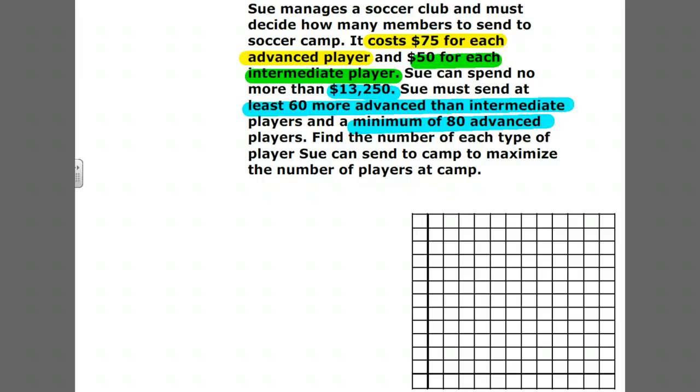Find the number of each type of player Sue can send to camp to maximize the number of players. We have to write a bunch of inequalities to represent these constraints. She is limited by the amount of money she can spend and the number of types of players.